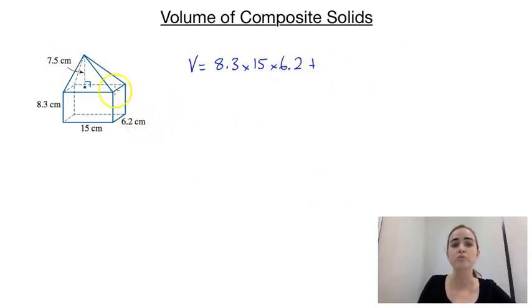And then we're going to add on the volume of the pyramid on the top so that would be a third times the area of the base which would be the 15 times the 6.2, and then we need to multiply that by the perpendicular height which is that 7.5 there.